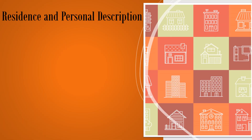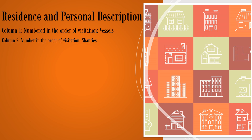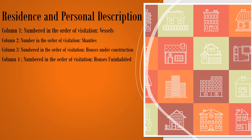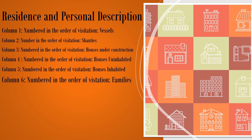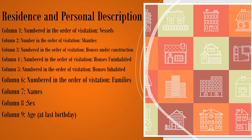The first section of questions has to do with residents and personal descriptions. Column 1: numbered in the order of visitation — vessels, remember those ships. Column 2: shanties. Column 3: houses under construction. Column 4: houses uninhabited. Column 5: houses inhabited. Column 6: families. Column 7: family names. Column 8: sex — F or M. Column 9: age at last birthday. Column 10: born within the last 12 months.